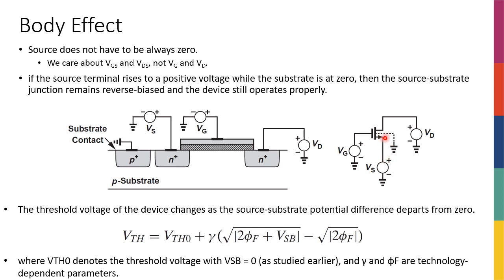The source of a transistor doesn't have to be connected to ground. In many circuits, the source is connected to some other node — another transistor, a resistor, or something similar. Up to now, all our discussions assumed source was at ground. If the source has a nonzero voltage, the diode between the P-type substrate and the N-type source is still reverse biased, since the P-substrate is always connected to the lowest potential in the circuit.